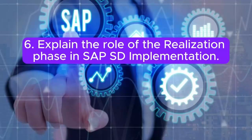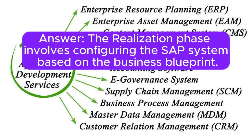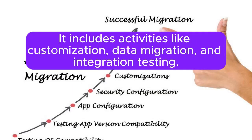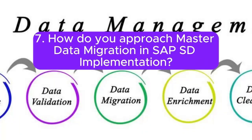Question 5: What are business process documents (BPDs) in the context of SAP SD implementation? Answer: Business process documents (BPDs) document the detailed business processes within SAP SD. They serve as a reference for system configuration and are used to map business requirements to SAP functionality. Question 6: Explain the role of the realization phase in SAP SD implementation. Answer: The realization phase involves configuring the SAP system based on the business blueprint. It includes activities like customization, data migration, and integration testing.